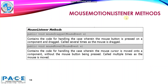Similarly, the MouseMotionListener class provides a number of methods — for example, mouseDragged and mouseMove. The method mouseDragged contains the code for handling the case wherein the mouse button is pressed on a component and dragged; it is called several times as the mouse is dragged. The mouseMove method contains the code for handling the case wherein the mouse cursor is moved onto the component without the mouse button being pressed; it is called multiple times as the mouse is moved.